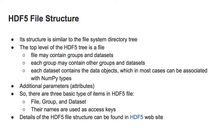To sum up, we have three basic types of items in HDF format: file, group, and datasets. Their names are used as access keys, so the idea of the HDF data format is that we can access things in a key-value manner, like dictionaries in Python.